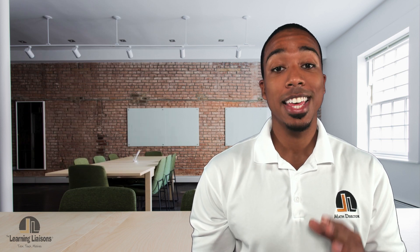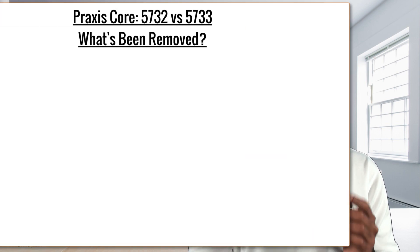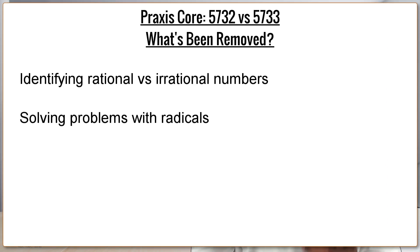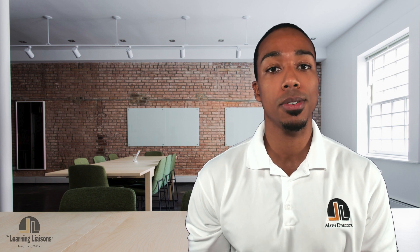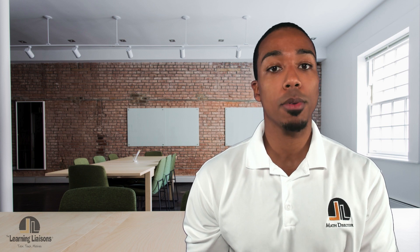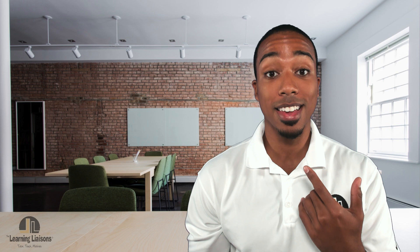They made these changes so that all problems on the test are identified as critical for educators to possess, which means they removed problems identified as non-critical. Those removed types of questions include: identifying rational versus irrational numbers, solving problems with radicals, working with functions, and solving problems involving three-dimensional figures like volume and surface area of a cone, prisms, and pyramids. In addition, they will now provide you with the geometric formulas you need for many of these problems. The purpose is to do away with procedural fluency — just memorizing how to do certain problem types — so you can focus more on thinking critically and engaging with the problem itself.